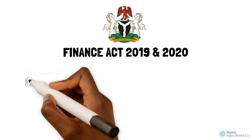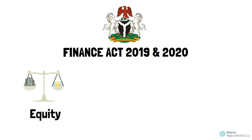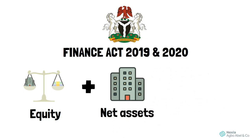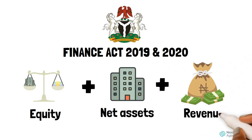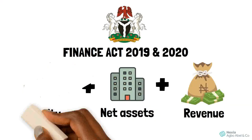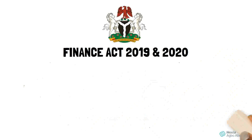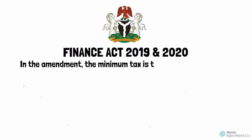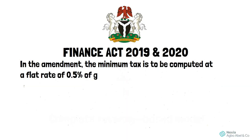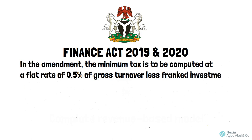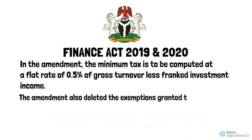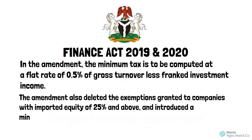In the Finance Acts of 2019 and 2020, the federal government amended the laws governing minimum tax and introduced a new basis for computing it, moving away from a combination of equity, net assets, and revenue-based approach to a complete revenue-based model. Under the amendment, the minimum tax is to be computed at a flat rate of 0.5 percent of gross turnover less franked investment income. The amendment also deleted the exemptions granted to companies with imported equity of 25 percent and above.